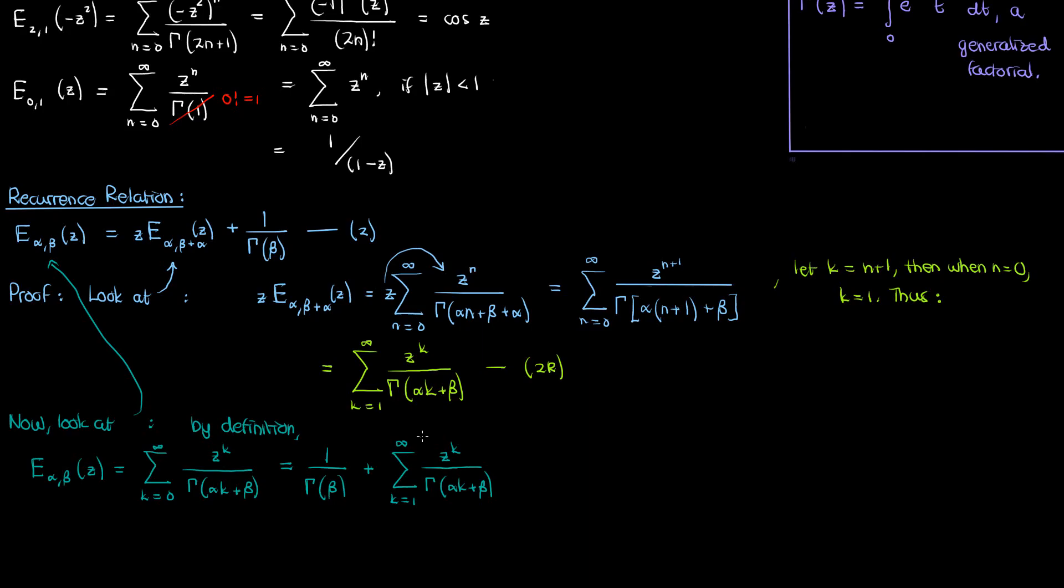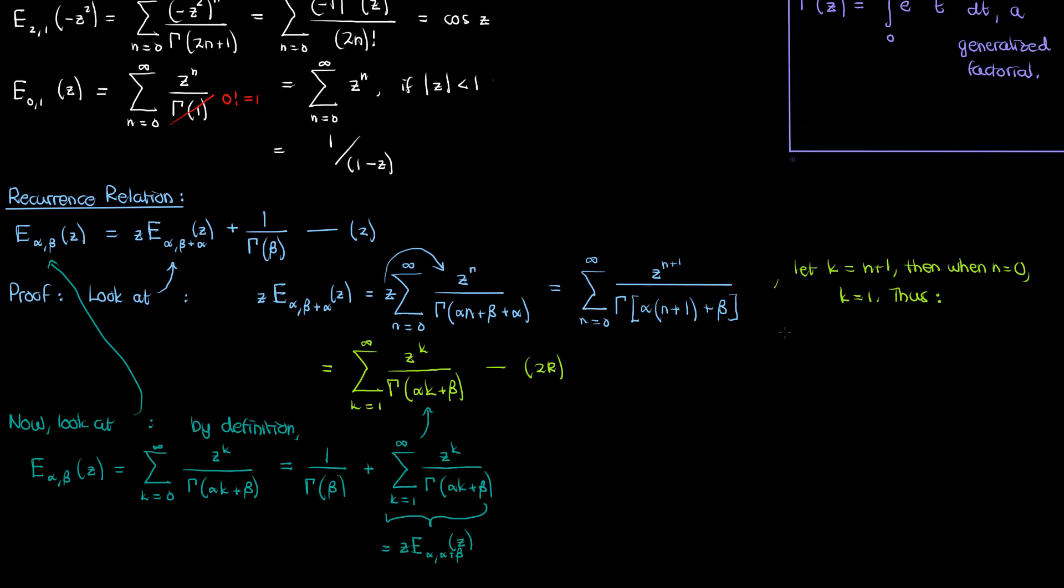Now if we look at equation 2r, this second term on the right, this summation that starts from k equals 1, is exactly equal to z times the Mittag-Leffler function at alpha and beta plus alpha, as we showed above, so therefore we have proven this recurrence relation.